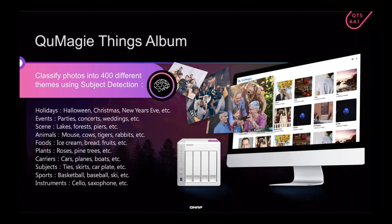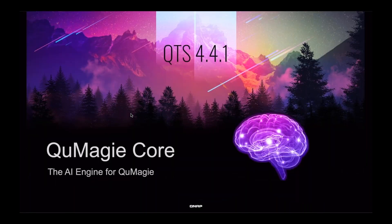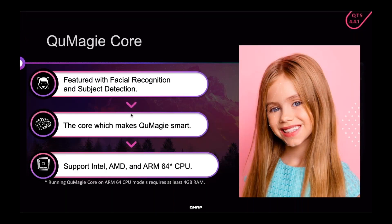QMagic not only has face recognition but also allows you to classify your photos into many different themes because it can recognize many kinds of objects and themes — for example, holidays like Halloween, Christmas, and New Year's Eve; events like parties, concerts, and weddings; scenes like lakes, forests, and piers. There are about 400 different themes available. QMagicore is the AI engine that powers this, with face recognition and subject detection, and it supports Intel, AMD, and 64-bit ARM CPUs — though you should have at least 4 GB of RAM.